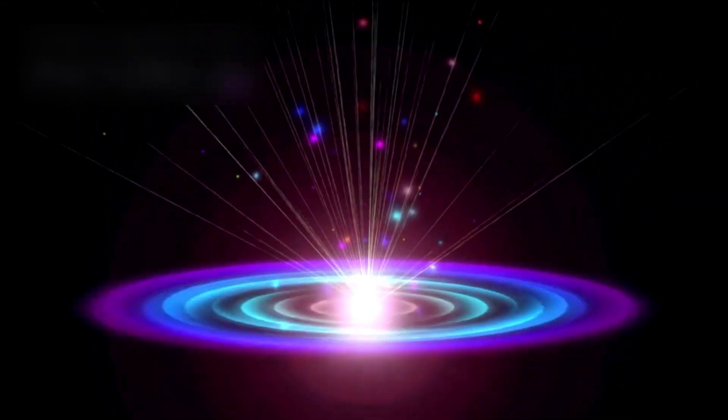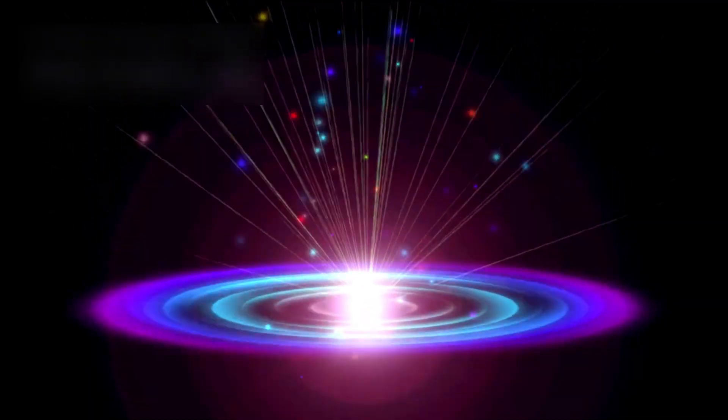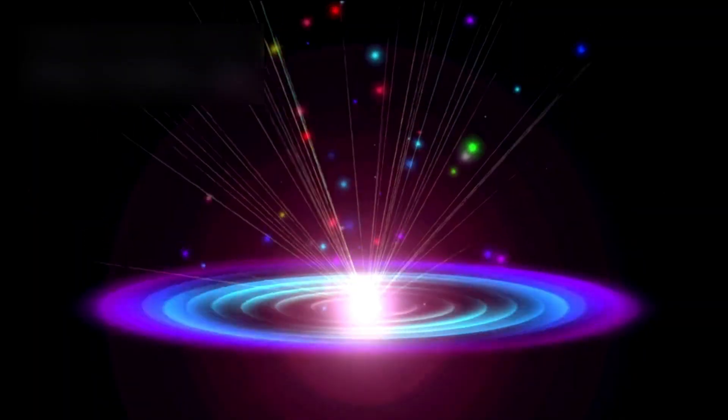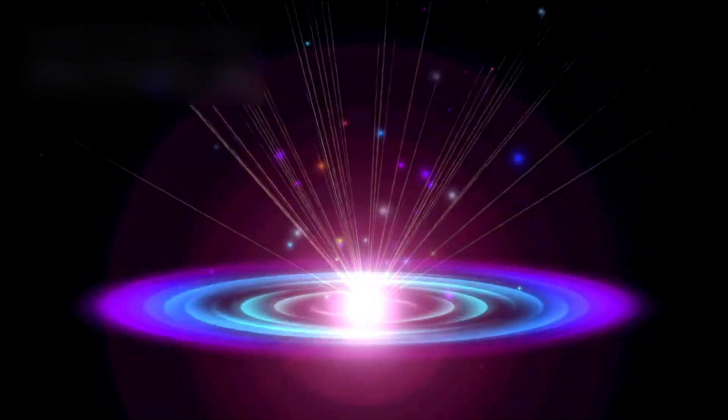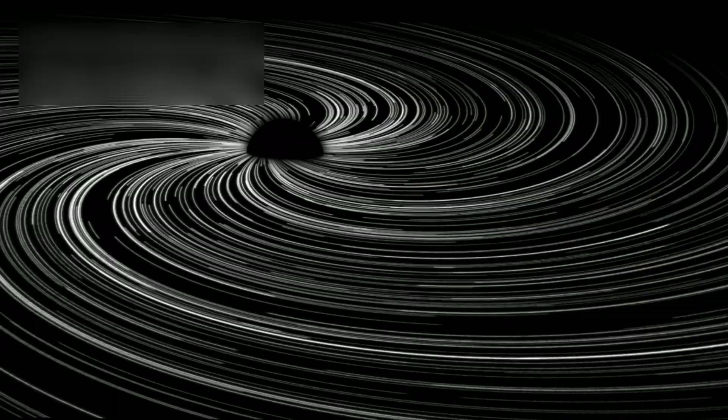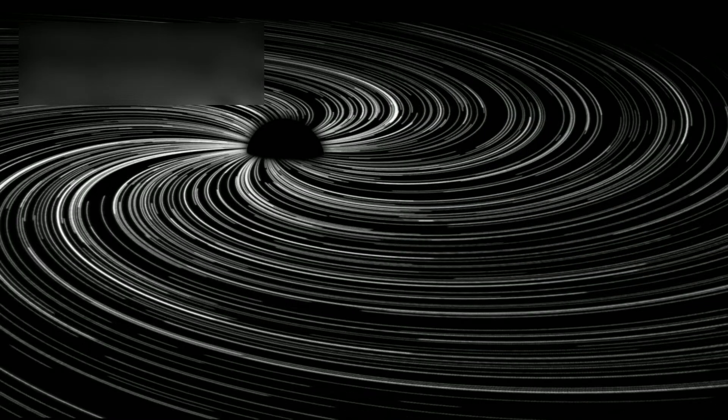Zooming out further, we encounter the Local Group of galaxies, then the Virgo Cluster, which contains over 1,500 galaxies. And beyond that lies the Laniakea Supercluster, home to over 100,000 galaxies. Still, this is just the visible tip of the iceberg.